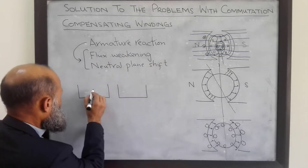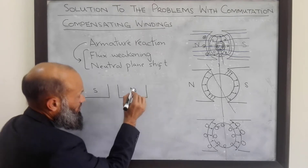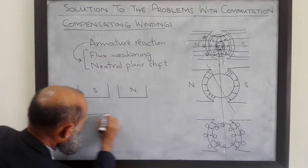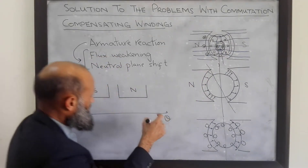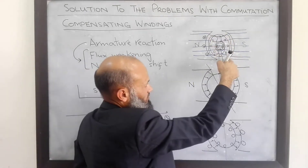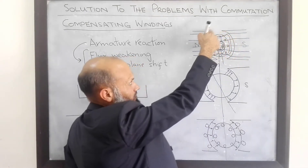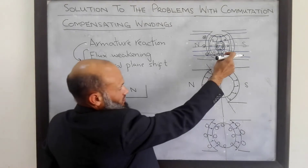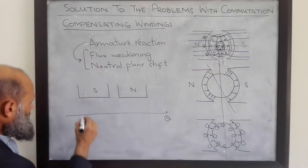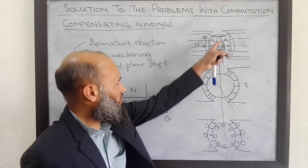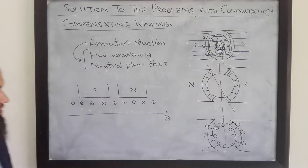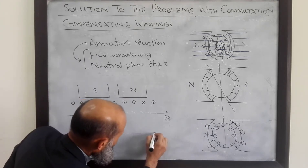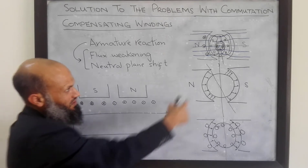Along the surface of the machine, this is the angle axis. As we move along the angle, we first encounter the south pole, then the air gap, and then the north pole. South pole, air gap, and north pole. Then we have the rotor windings with the direction of currents as indicated. Now I plot the MMF in the machine — total MMF — as a function of the angle. The MMF due to the main poles: if there is no armature reaction, this is the flux distribution along the surface of the rotor — it is uniform.